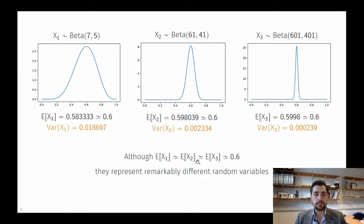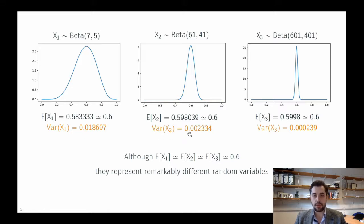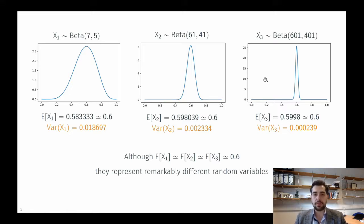A beta distribution with parameters 7 and 5 has an expected value very close to 0.6 and a variance of 10 to the power of minus 2. As we increase the number of samples by an order of magnitude, the expected value stays roughly the same but the variance drops by an order of magnitude. Increasing by another order of magnitude, the expected value changes little but the variance drops again. Although these three distributions have the same expected value, from a frequentist point of view they represent remarkably different random variables.